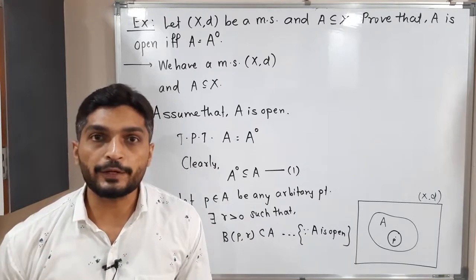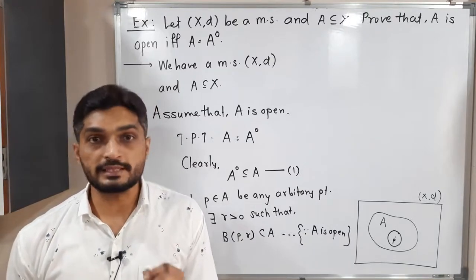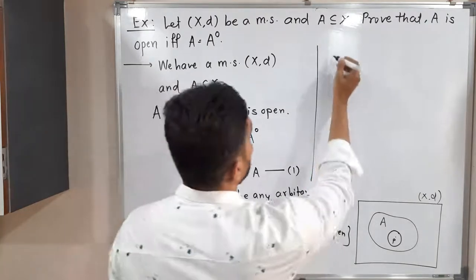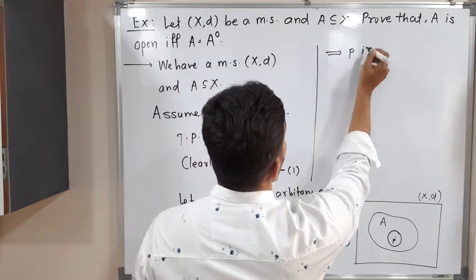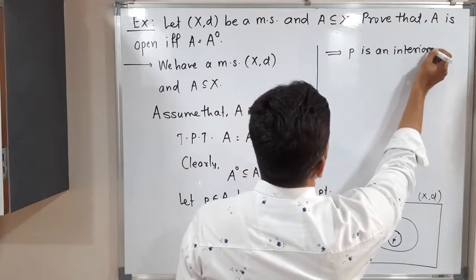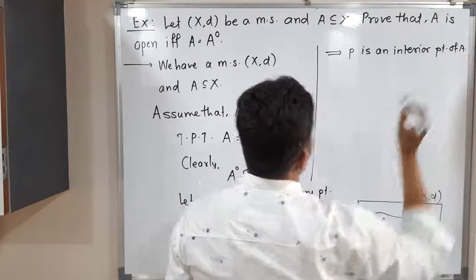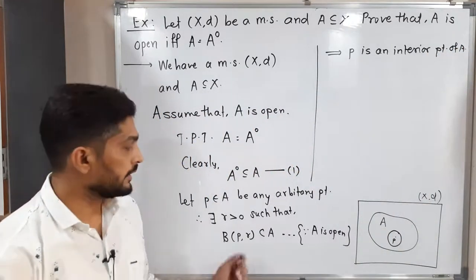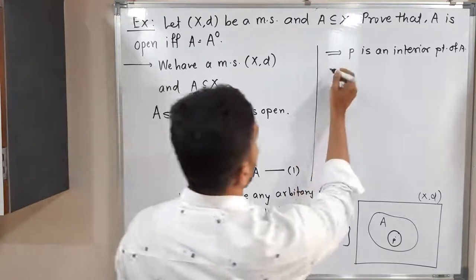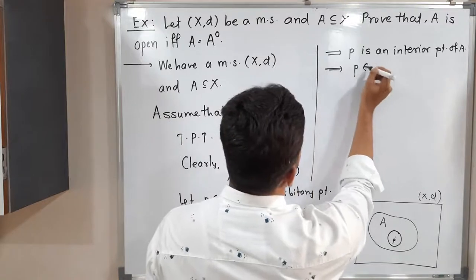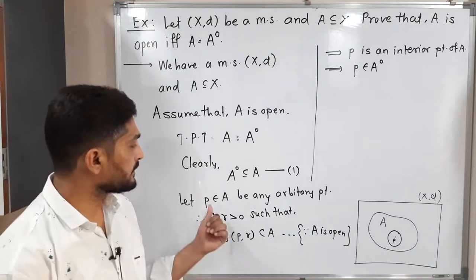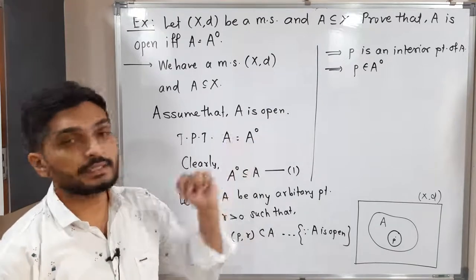This is also the definition of an interior point, so therefore P is an interior point of A, by the definition of an interior point. Since the open ball around P is a subset of A, we can write P belongs to A interior.